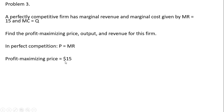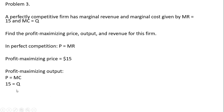So the profit maximizing price — the equilibrium price, the going market price — is $15, where quantity demanded equals quantity supplied in the market. We set that price equal to marginal cost: 15 equals Q, so the profit maximizing output is 15 units. Revenue is price of 15 times quantity of 15, giving us our profit maximizing revenue of $225.